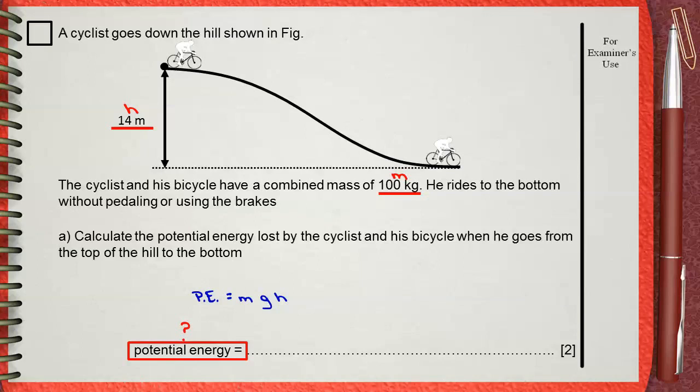m is 100 kilograms, g is the acceleration due to gravity, 10 meters per second squared, and h is 14 meters. This gives the potential energy of 14,000 joules. So, potential energy at the top of the hill equals 14,000 joules.